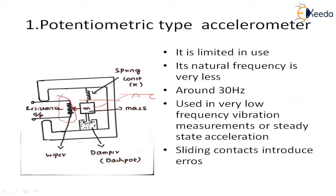When I am vibrating this particular body, the change in position of the mass relative to the accelerometer case is converted directly into a change in resistance. Here we are going to get the change in resistance at the output terminals. This change in resistance at the output terminals needs to be connected with other signal conditioning elements.